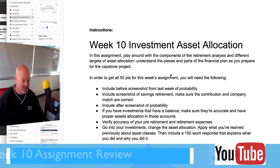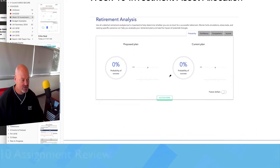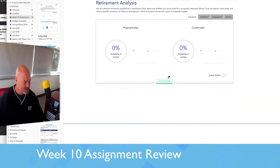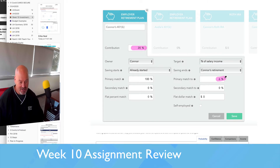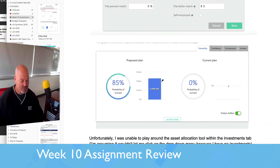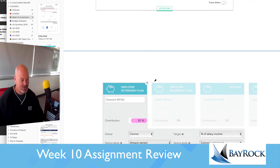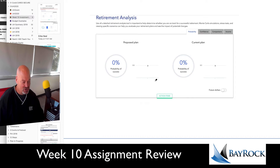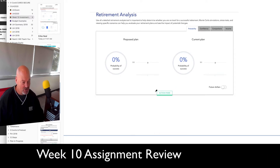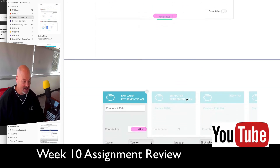Here's another assignment — this is Connor. Connor shows his 401k with a 20% contribution and a match. That's great. Then in the proposed plan, let's scroll down. I'm not seeing the data card that shows where you would click to change your asset allocation.